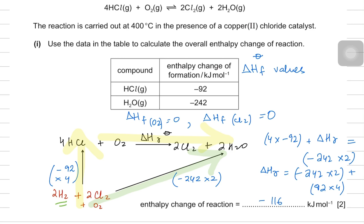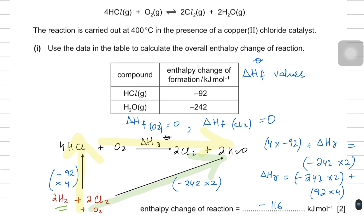The value is minus 116 kJ per mol. This is how you solve these kinds of questions. I hope these ideas are clear for you guys. Stay tuned, thanks.